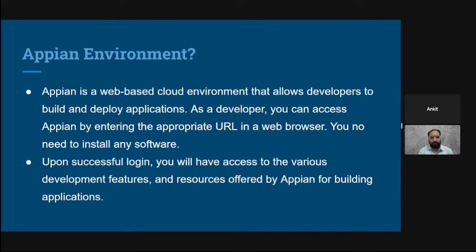Coming to the first point — the Appian environment. Appian is a web-based cloud environment that allows developers to build and deploy applications. As a developer, you can access Appian by entering the appropriate URL in a web browser. You don't need to install any software. It supports all types of browsers — Chrome, Mozilla, Edge, Apple Safari, and others. Once you hit the URL, a login window opens where you fill in your Appian credentials and submit to access the environment.